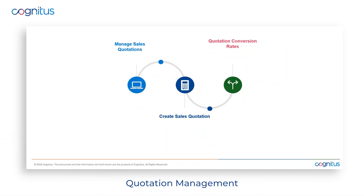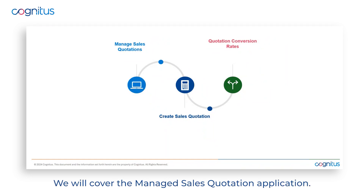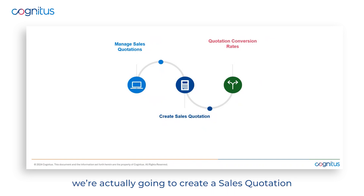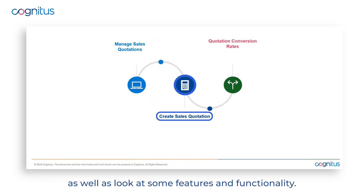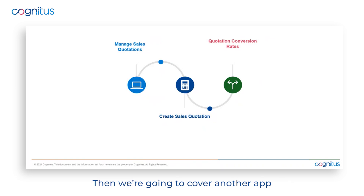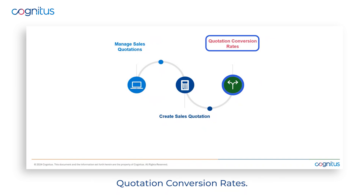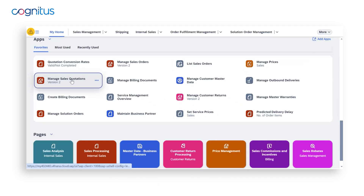Today I'm going to take you through quotation management within S/4 HANA Public Cloud. We will cover the Managed Sales Quotation application — from within that we're going to create a sales quotation and look at some features and functionality. Then we're going to cover another app: Quotation Conversion Rates.